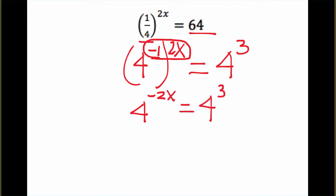So what I end up with here, the 4s will cancel out because they are the same base. And I get negative 2x equals 3. If I solve for x, x equals negative 1.5.